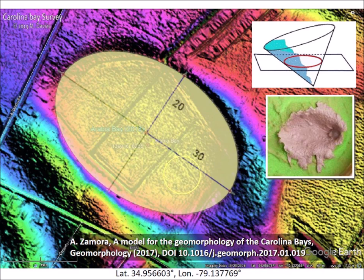Experiments of ice impacts on a viscous surface have demonstrated that inclined conical cavities appear as ellipses when viewed from above, as shown in the inset figure.